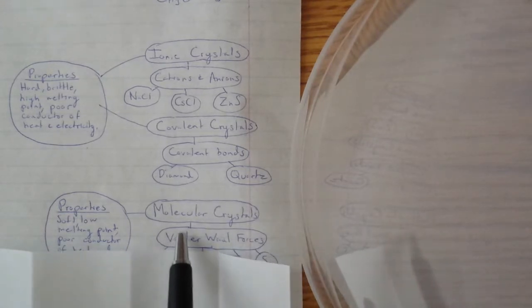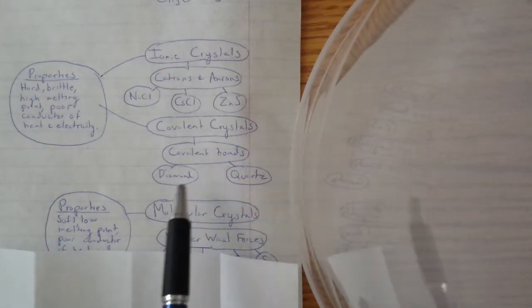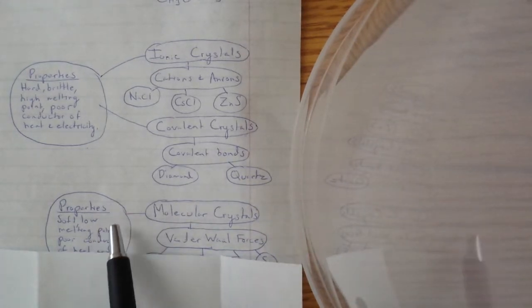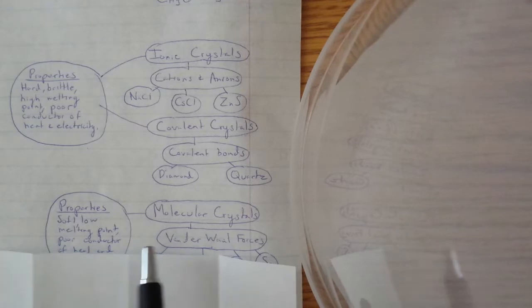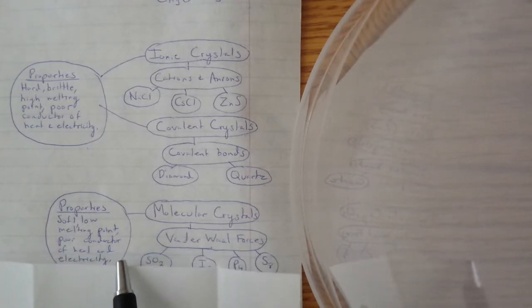These are relatively weak compared to covalent and ionic bonding, so the properties show that. They're usually soft because of weak bonds, with a low melting point that doesn't require much energy to break because they're weak.